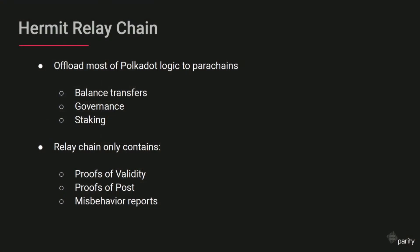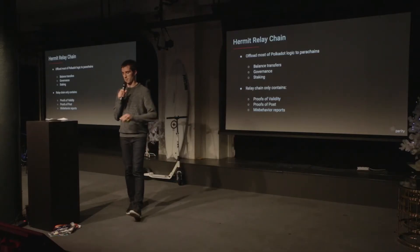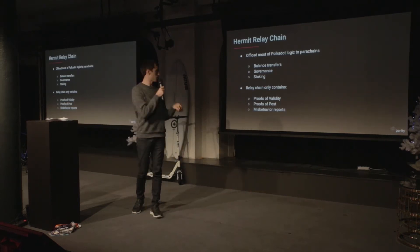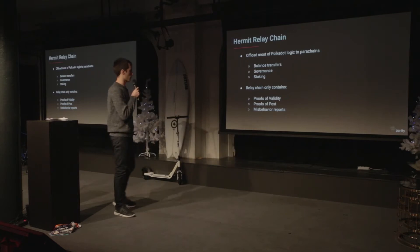The first thing I'll talk about is the Hermit relay chain. As you probably know, Polkadot has this parachain model where there's a bunch of different parachains executing around this relay chain. But the relay chain has its own stuff too. In the relay chain blocks, you have these proofs of validity for the parachains, but the relay chain also has its own tokens, its own governance, and proof-of-stake stuff.